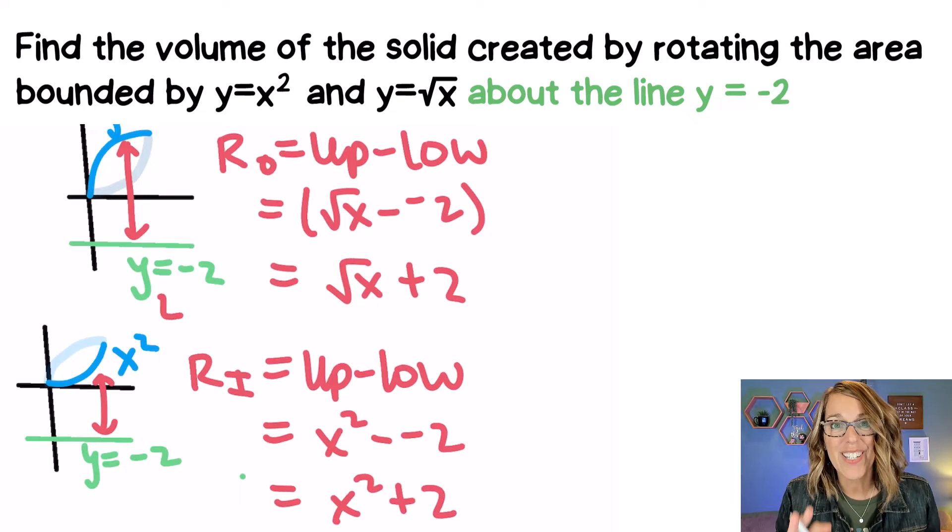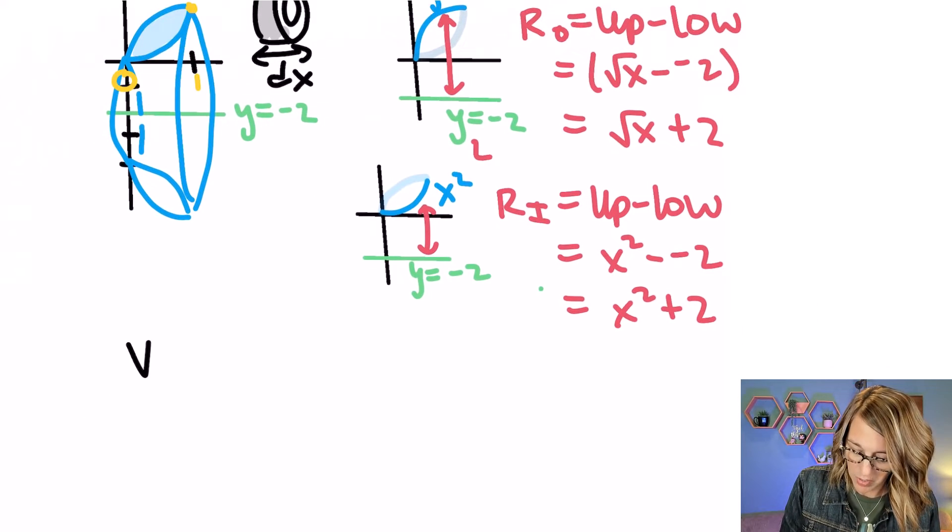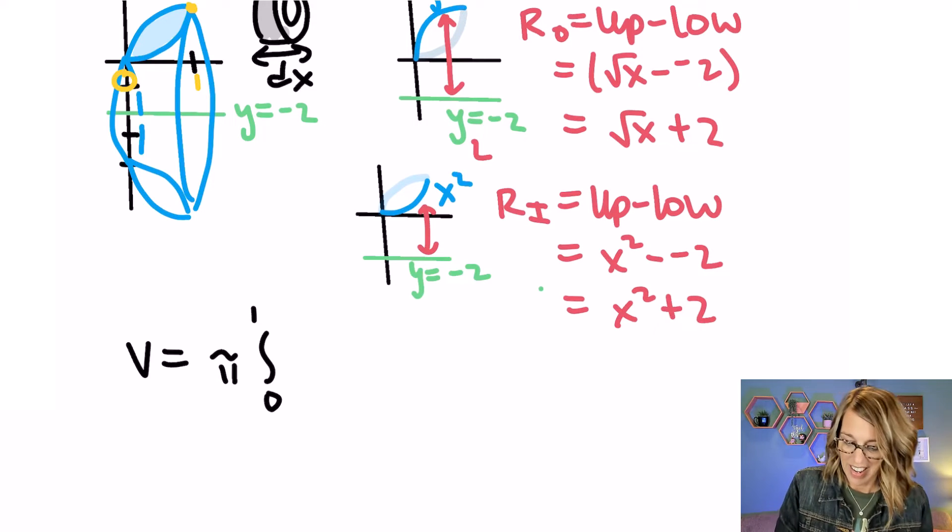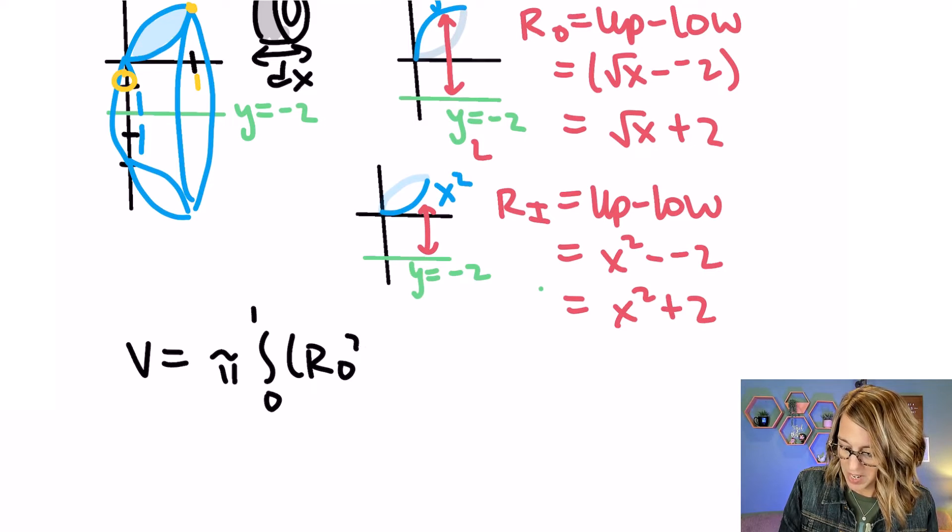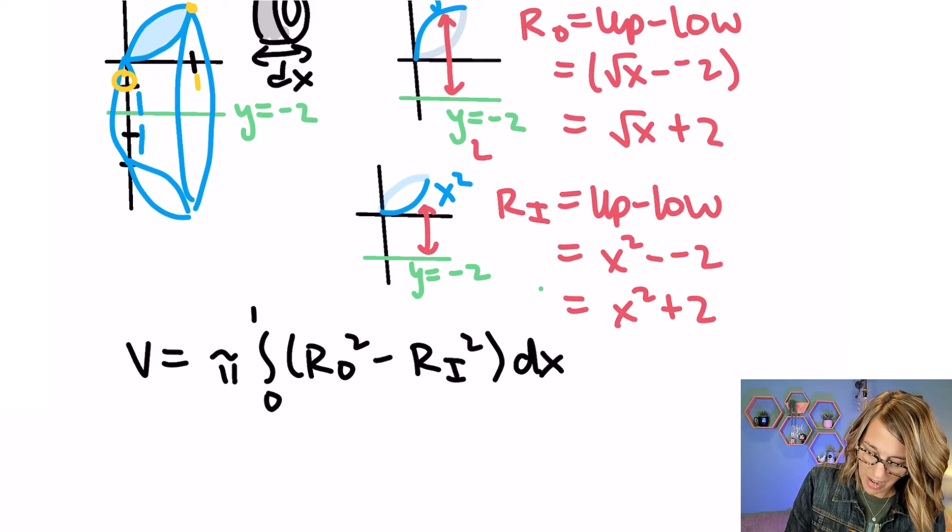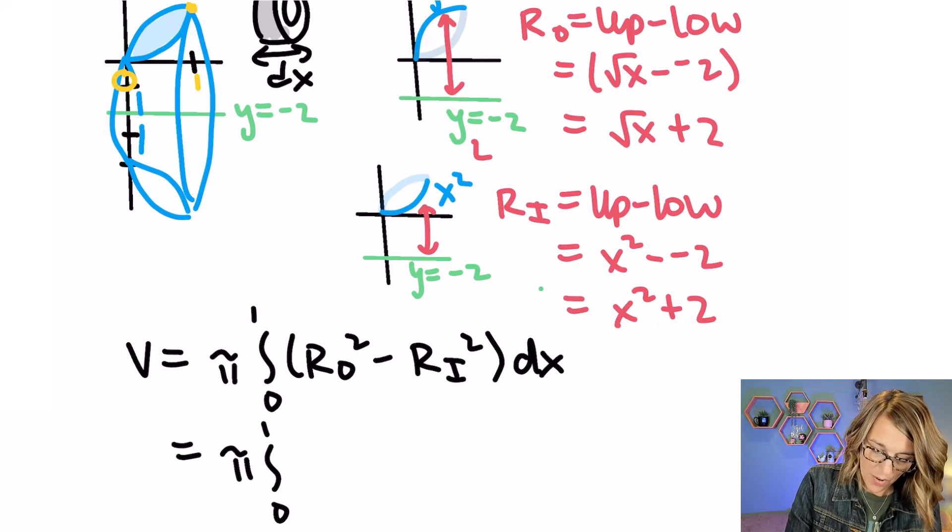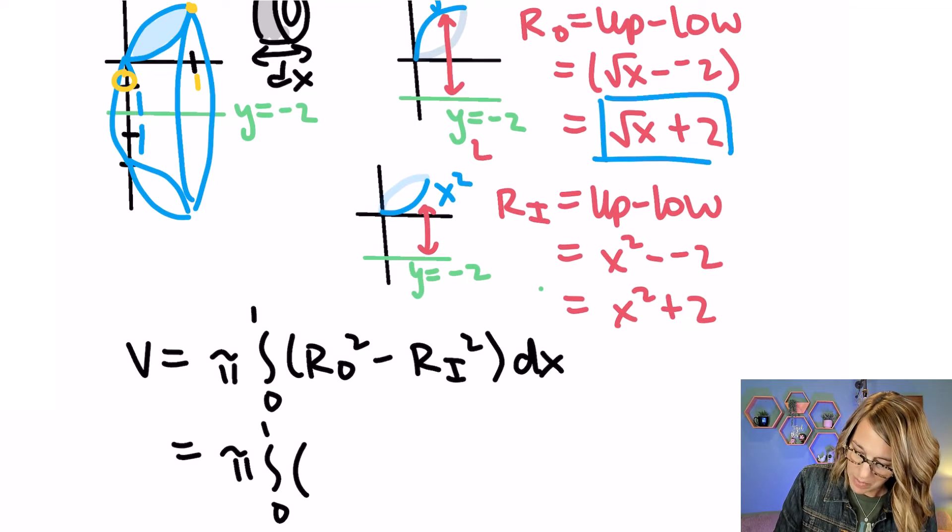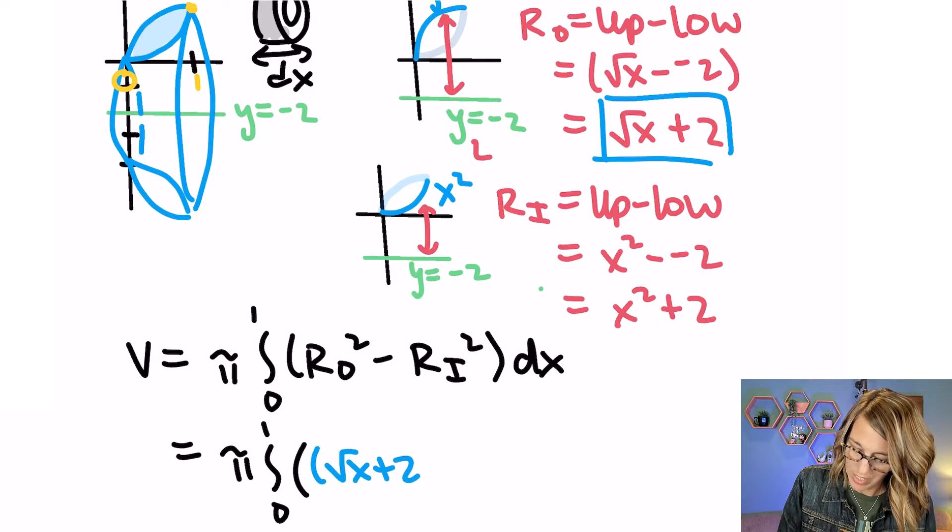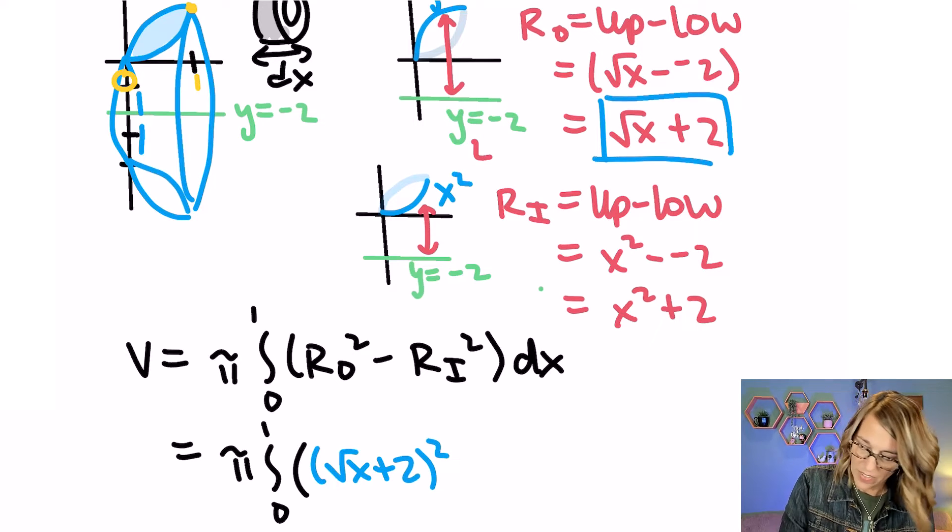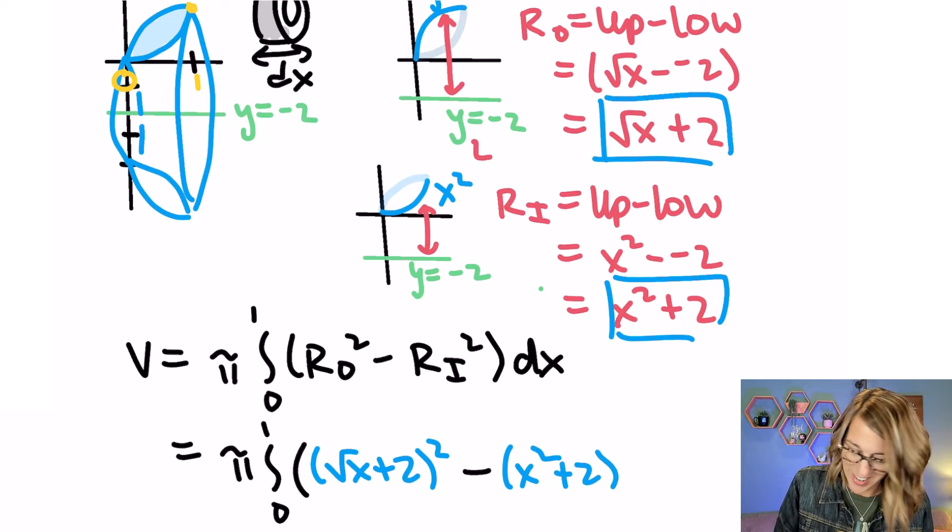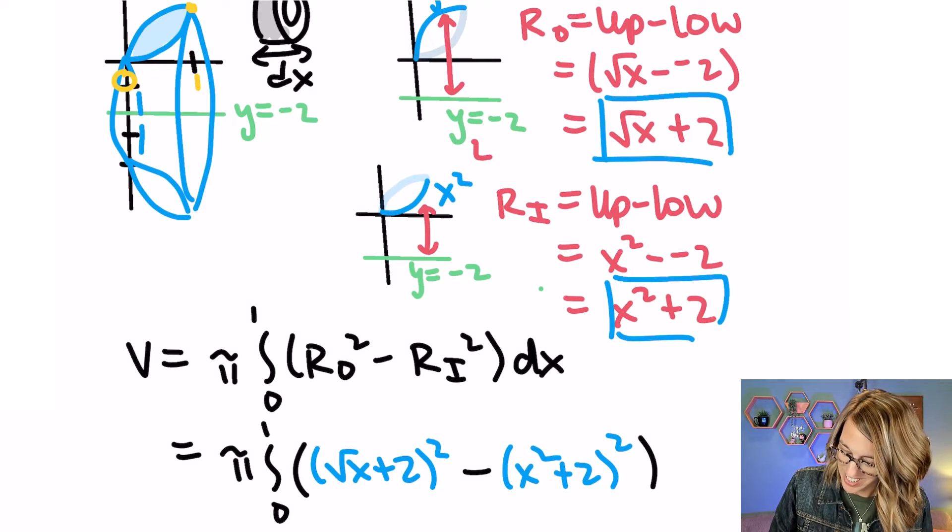I'm ready to put these into my washer formula. So volume is equal to pi integral from, I'm in the x direction going from 0 to 1. And then I want my outer radius squared minus my inner radius squared. Everything's with respect to x. So I've got pi 0 to 1. My outer radius squared. My outer radius squared is this guy right here. So that's going to be radical x plus 2 quantity squared minus my inner. And that inner is x squared plus 2. So x squared plus 2. That's a squared squared. And then of course this is a dx.